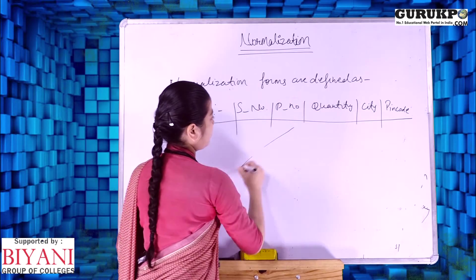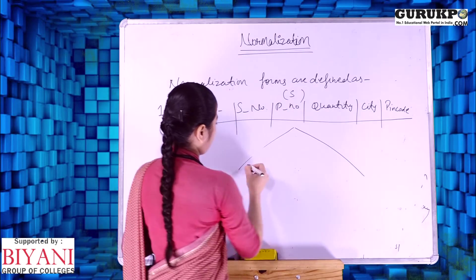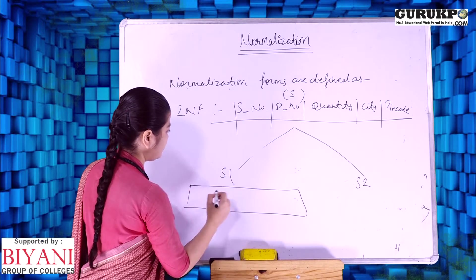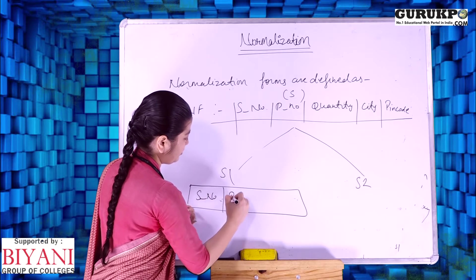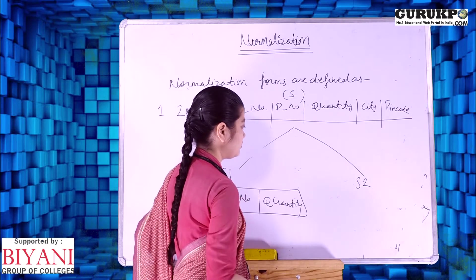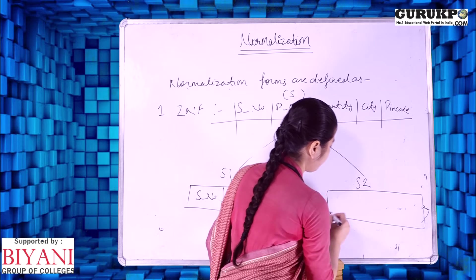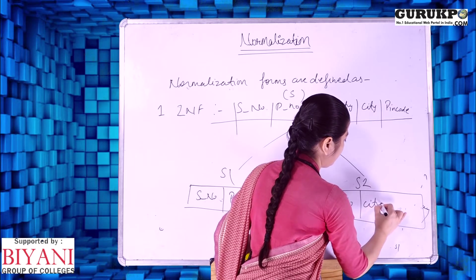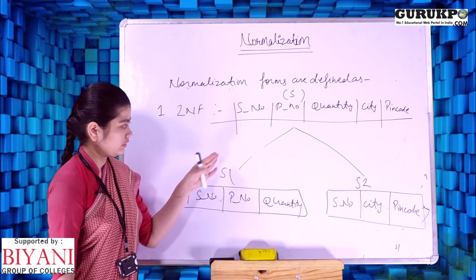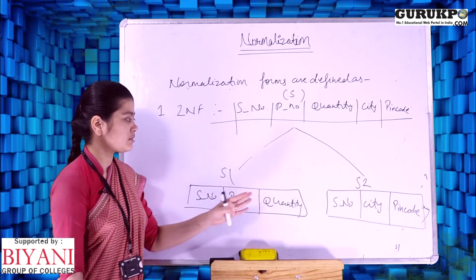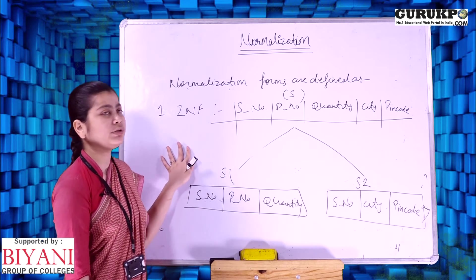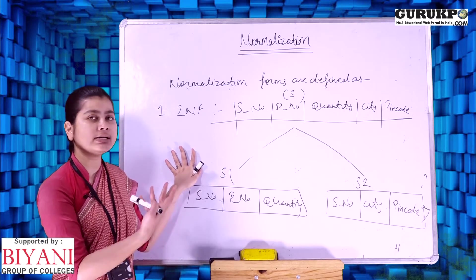We have to remove this partial functional dependency by splitting this table into two or more tables. We split table S into S1 and S2. Table S1 has serial number, predict number, and quantity. Table S2 has serial number, city, and pin code. After splitting into two tables, there is no partial functional dependency. In Second NF we ensure there is no partial functional dependency.